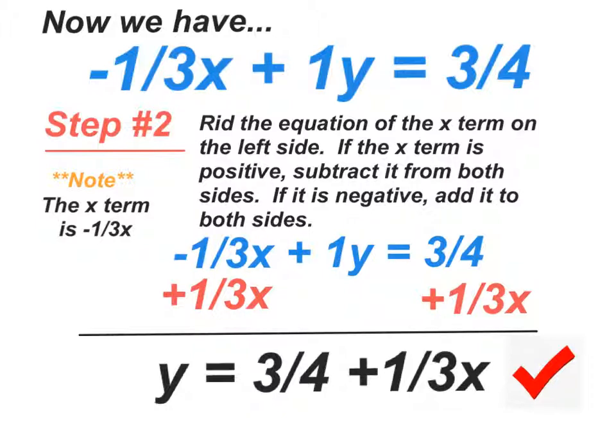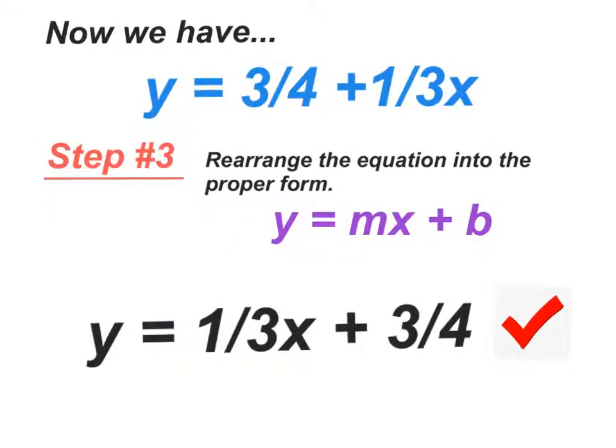Finally, step number 3, we just need to do a little rearranging. Take the 1 third x and 3 fourths and flip-flop them around. And then at last, we got our equation in slope-intercept form. I hope you find this video both helpful and informative.